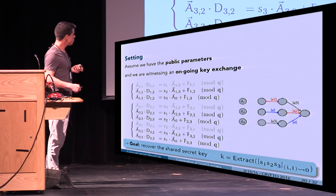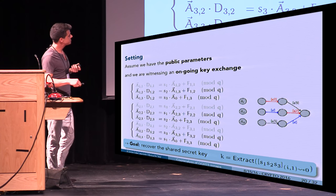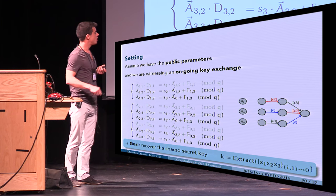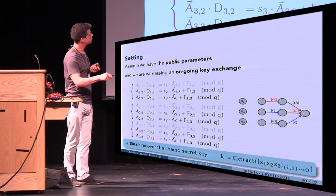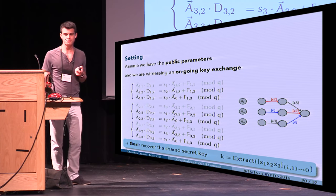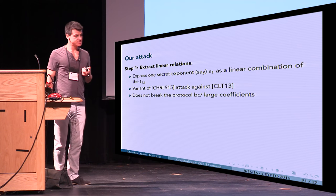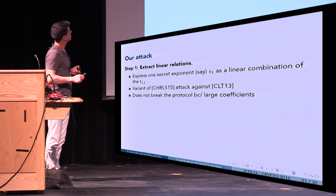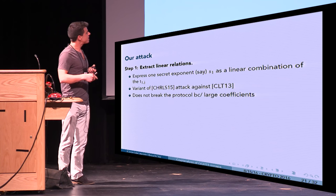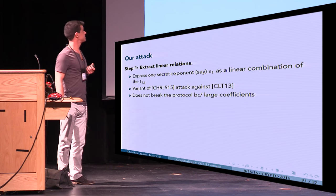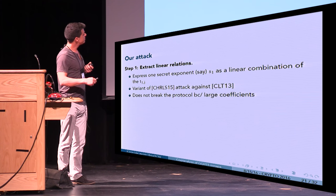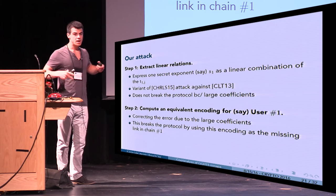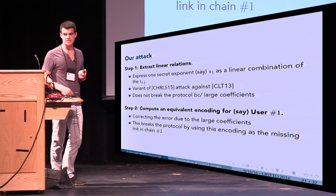The goal is to recover the shared secret key k, which is the output of key generation on s1, s2, s3 over one of the paths — the first, second, or third row. Our attack extracts a linear relation over s1 and the t_{1j} values. It's a variant of the chain rule attack against CLT13. The coefficients are large so we cannot use it directly, but we can compute an equivalent encoding with small error and use that in the protocol.